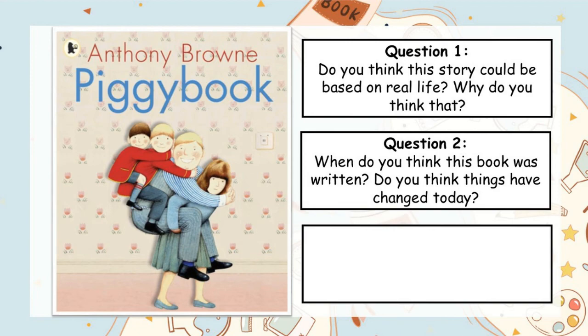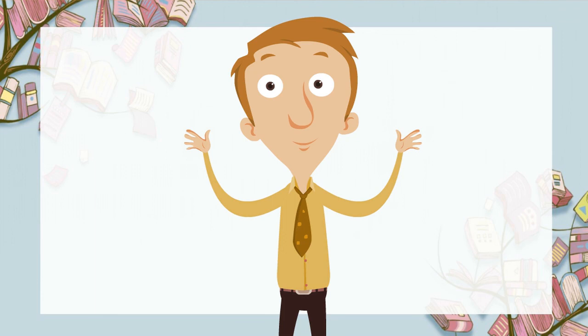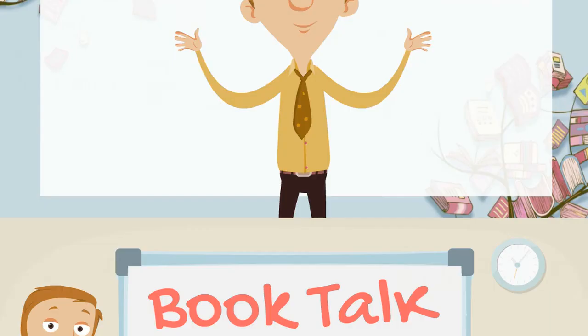The third and final question has to do with the two boys in the story. Do you think the little boys are to blame for their bad behaviour? Give a reason why you think that. Do you think yes, they are to blame? Or no, they're just copying what they're seeing? Pause the video and write down your opinion. I'm very much looking forward to hearing what you think about those three questions and any other wonders you had about this story. That's all we have time for today. Until next time, take care.